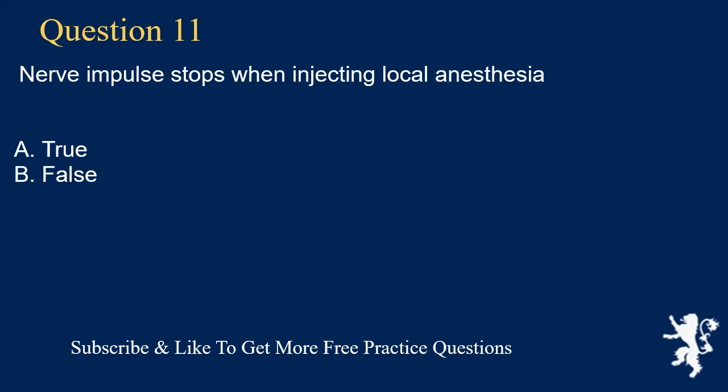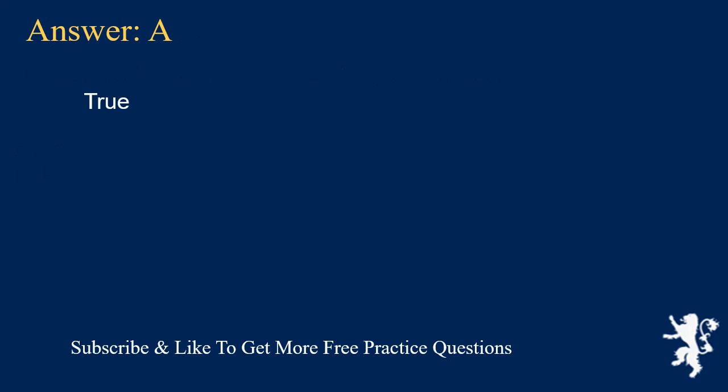Question 11. Nerve impulse stops when injecting local anesthesia: A. True, B. False. Answer: A. True.